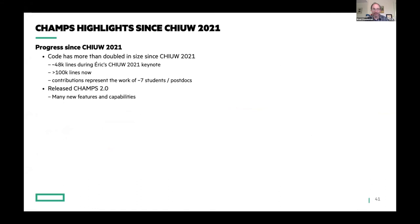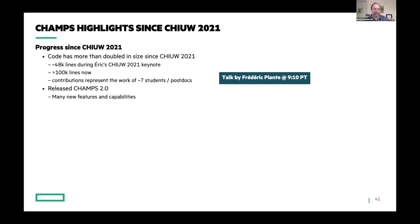The code they've written has more than doubled in size since the keynote last year — from about 50,000 lines to about 100,000, maybe even 120,000 lines now. This doubling in code has been the work of basically seven students and postdocs. Since last year they released CHAMPS 2.0 with many new features and capabilities, and we'll have a talk from Frédéric from the CHAMPS team very shortly that will cover some of those new things.